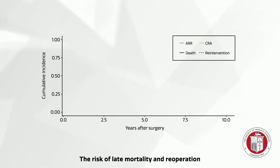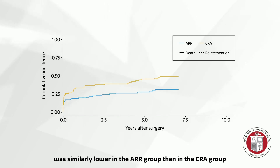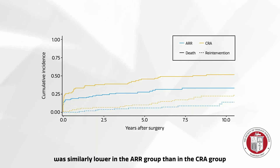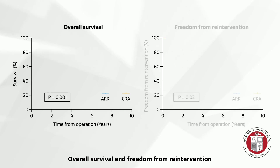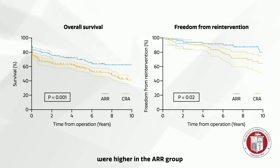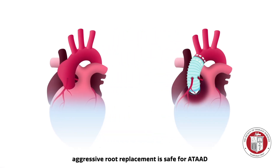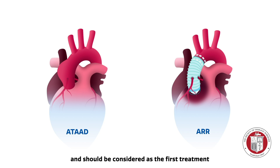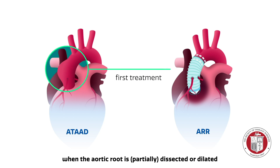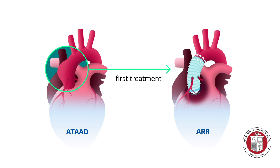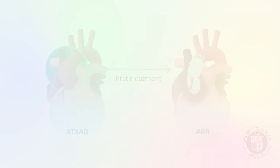The risk of late mortality and re-operation was similarly lower in the ARR group than in the CRA group. Overall survival and freedom from re-intervention were higher in the ARR group. These results demonstrate that aggressive root replacement is safe for ATAAD and should be considered as the first treatment when the aortic root is partially dissected or dilated.